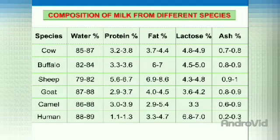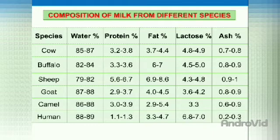The next species is camel. In camel's milk, the water percentage is 86 to 88%, protein 3.0 to 3.9%, fat 2.9 to 5.4%, lactose 3.3%, and ash 0.6 to 0.9%.